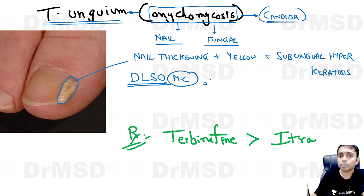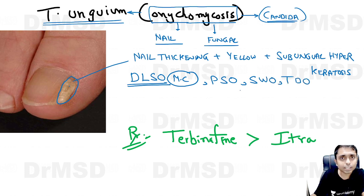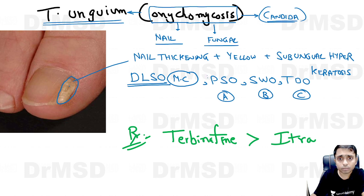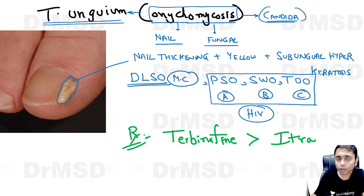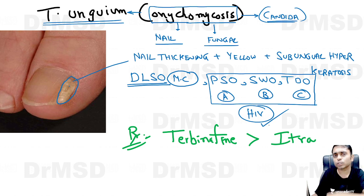There are other types which you must remember: proximal subungual onychomycosis, superficial white onychomycosis, and total dystrophic onychomycosis. Out of these three types, one of them is associated very routinely with HIV infection. Can you tell in the comment section what is that type of onychomycosis which is very routinely associated with HIV infection? Put your answer in the comment section — I will read it after this video is live.